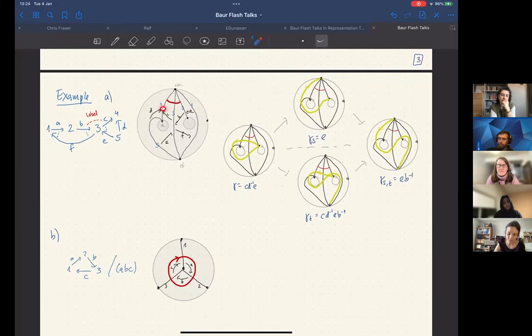You see, as in the previous talk, we would associate to each arc a point in the quiver. We take arrows for rotations, and the new feature is a label, which gives a new relation.